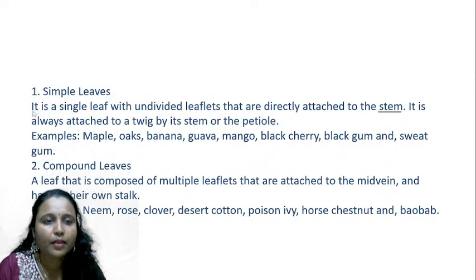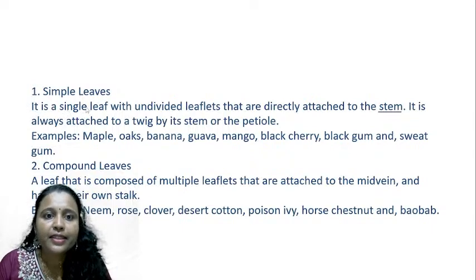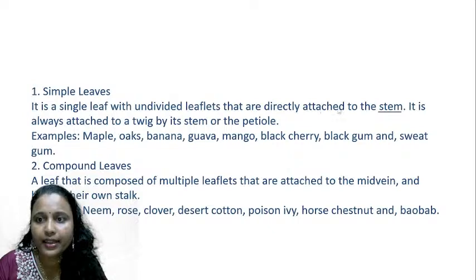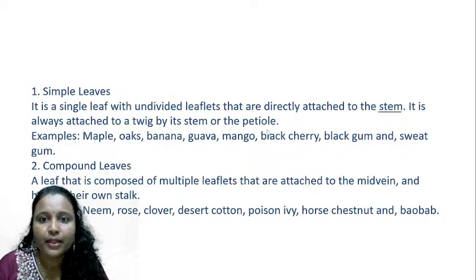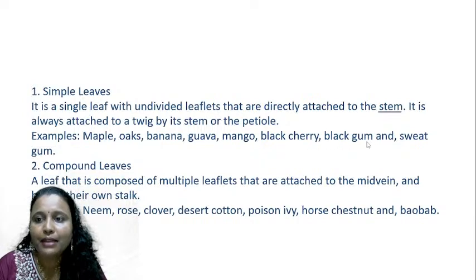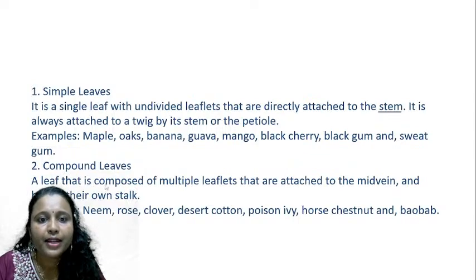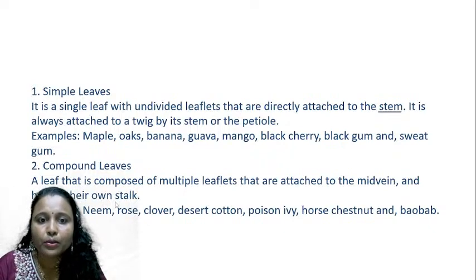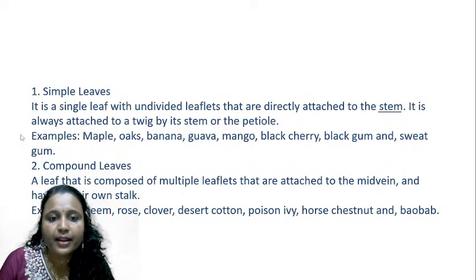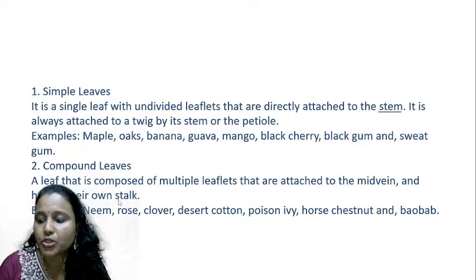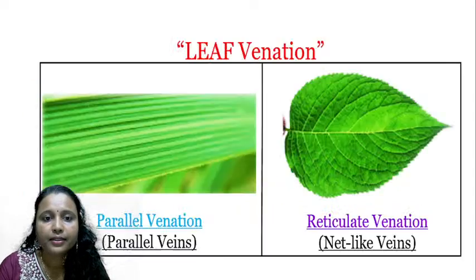A simple leaf is a single leaf with undivided leaflets directly attached to the stem, always attached to a twig by its stem or by the petiole. Examples of simple leaves: maple, oak, banana, guava, mango, black cherry, black gum, and sweet gum. A compound leaf is composed of multiple leaflets attached to the midvein, each having their own stalk. This covers the simple and compound leaves.